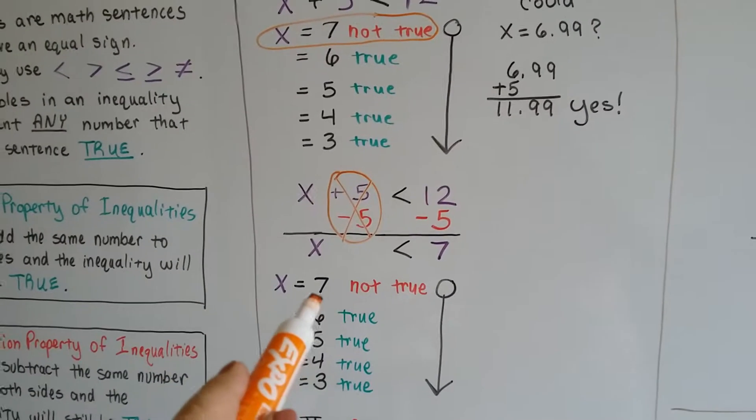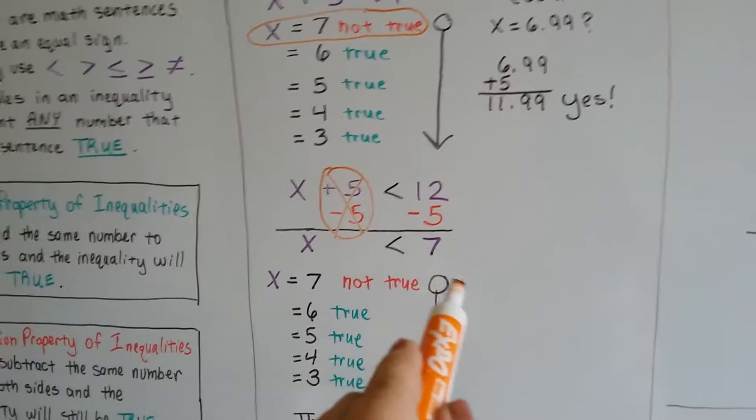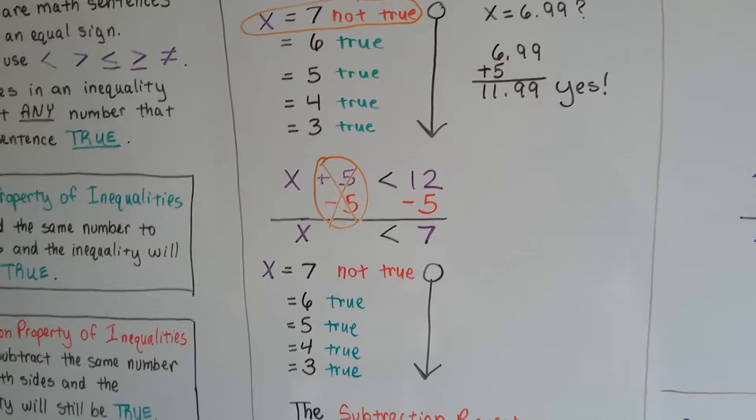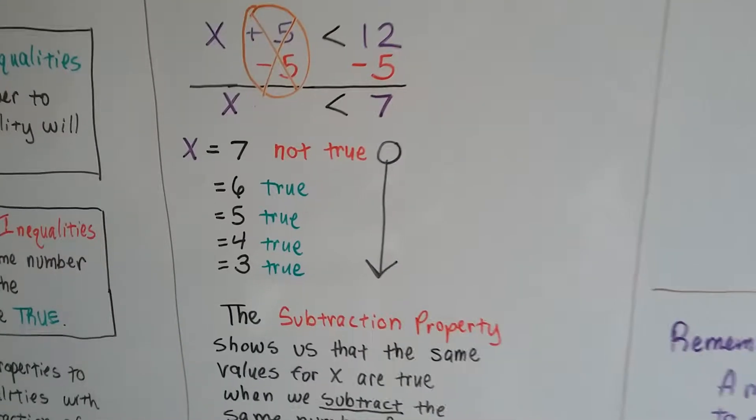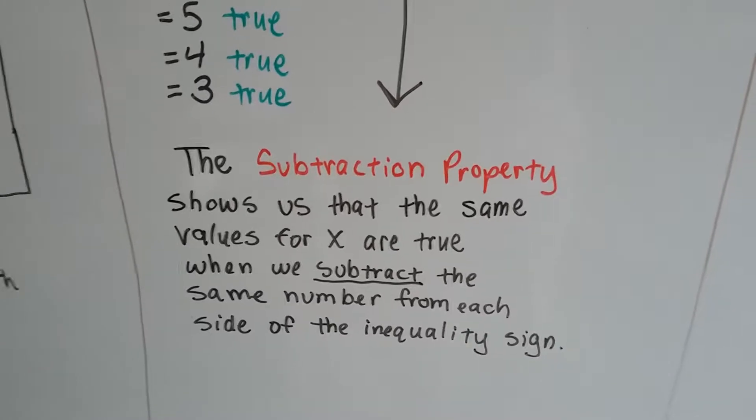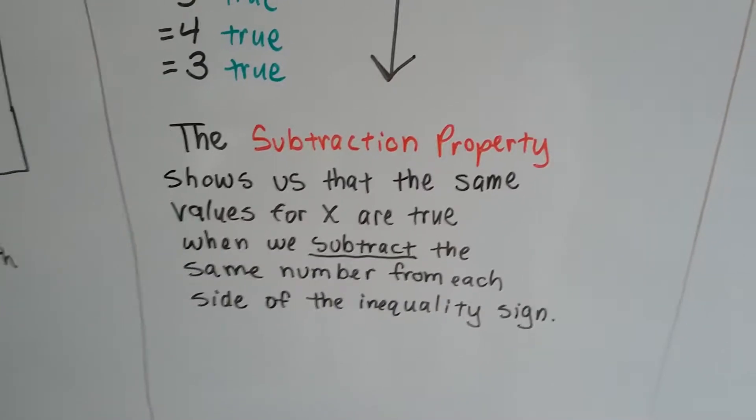And 6.99 could be true. 6.99 is less than 7. So we've got our circle that's open for the 7, and our arrow points to everything down below that because they're true. And the subtraction property shows us that the same values for x are true when we subtract the same number from each side of the inequality sign.